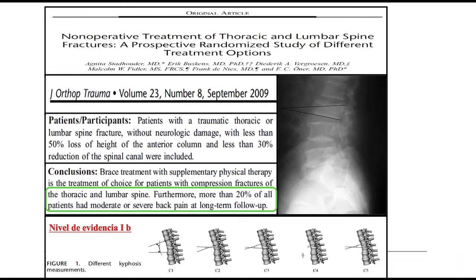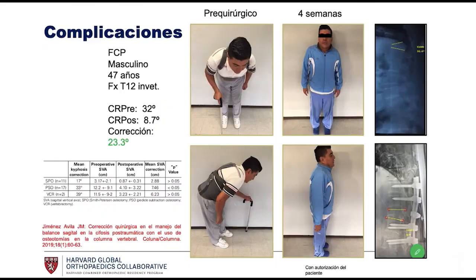In regards to treatment, there are articles that tell us about the criteria for opting for conservative management. This includes patients who do not have a neurological deficit with less than 50% loss of anterior column height and less than 30% obliteration of the spinal canal. They also report that up to 20% of these patients may have moderate or severe pain. In our experience, patients who have kyphosis greater than 30 degrees — and sometimes even less — are likely to have complications known as post-traumatic kyphosis, requiring more invasive treatment such as spine osteotomies to correct balance.